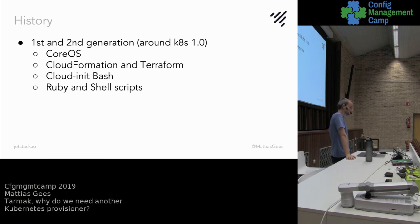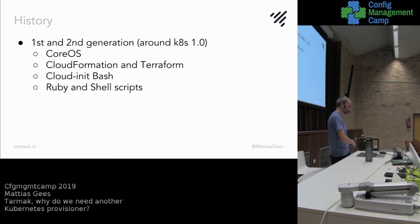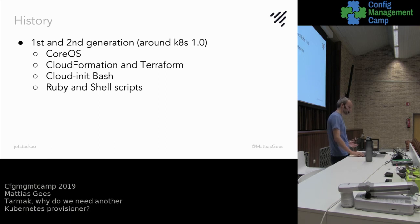Matt Bates, at the same time, went with CoreOS but chose Terraform for setting up the AWS infrastructure instead of CloudFormation. He also went with cloud-init bash, and instead of Ruby, he used bash scripts as a wrapper around it.